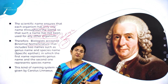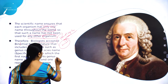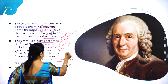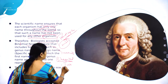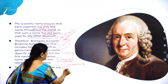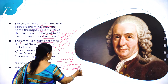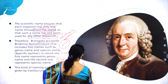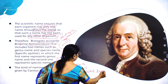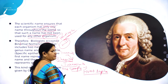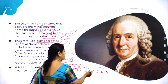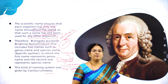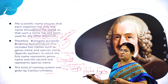Biologists therefore accepted one concept called binomial nomenclature. The word itself tells you: 'bi' means two, 'nomial' means naming. Binomial nomenclature means giving two names to one organism. For example, the scientific name of man is Homo sapiens — this is called binomial nomenclature.